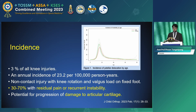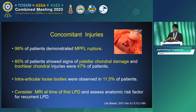The mechanism is typically a non-contact injury with knee rotation and valgus load on a fixed foot. Following first-time dislocation, 30 to 70% of patients experience residual pain or recurrent instability, with potential for propagation of damage to articular cartilage.